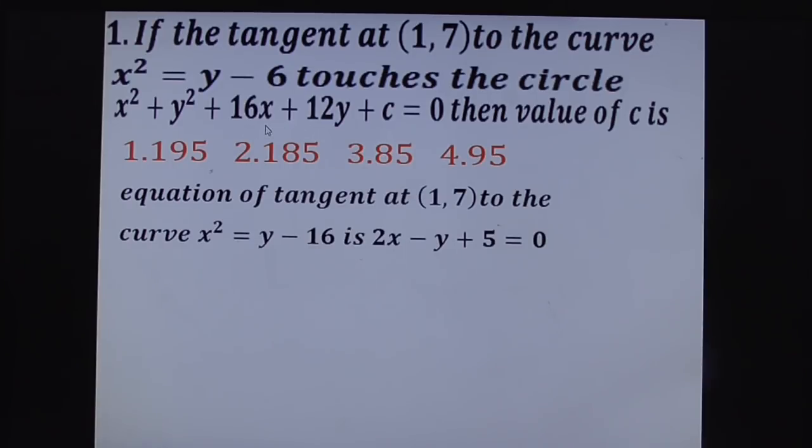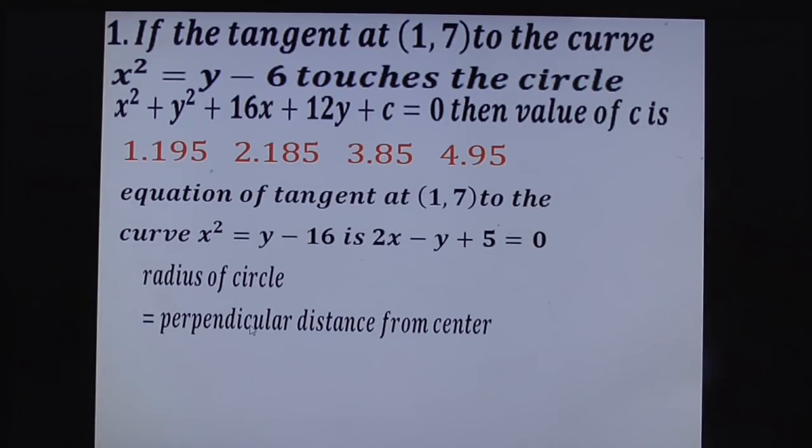What is radius? Square root of g² + f² - c. So here apply the tangency condition: radius of circle equals perpendicular distance from center to the tangent line.